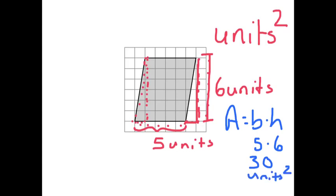Let's try counting and checking our work. This rectangle is the same size as the parallelogram because I moved that triangle over. Counting the grid gives us five by six, and five by six is 30. So there are 30 squares here, meaning there are 30 square units.